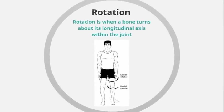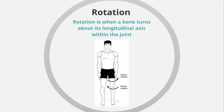Rotation can occur at the shoulder and the hip. This is when a bone turns about its longitudinal axis within the joint — almost like a twist in that particular limb. An example of rotation at the shoulder would be performing a topspin forehand drive in tennis, getting that twist on the arm to allow the racket to put topspin on the ball through lateral and medial rotation. Medial rotation is when the limb is twisting inwards towards the body, and lateral rotation is when the limb is twisting outwards away from the body. Performing that topspin drive in tennis would use medial rotation.